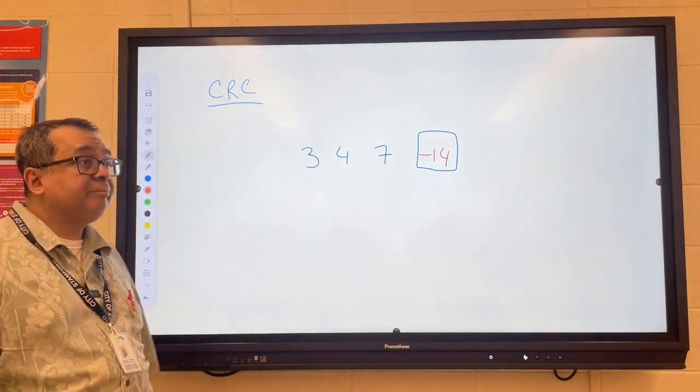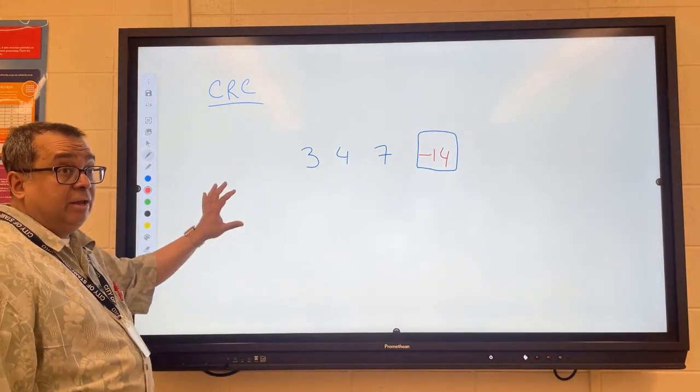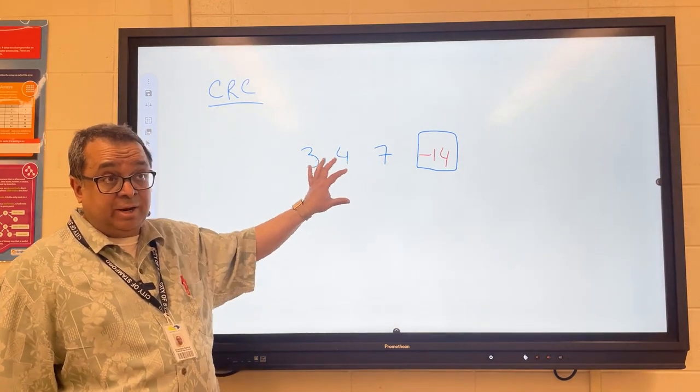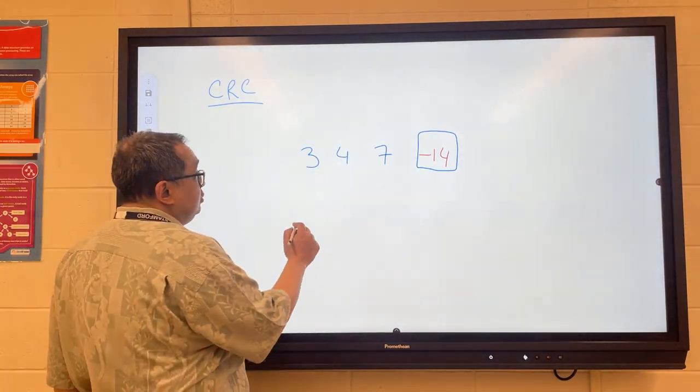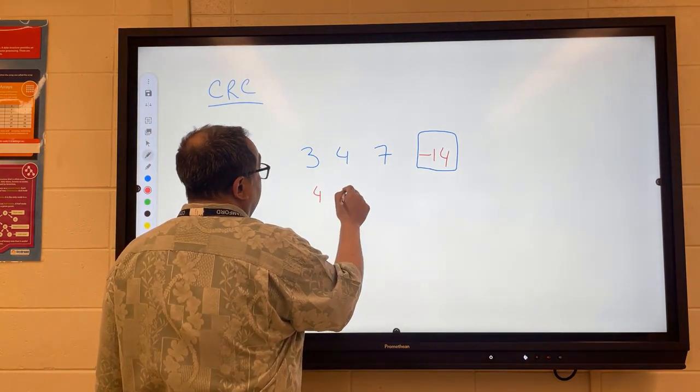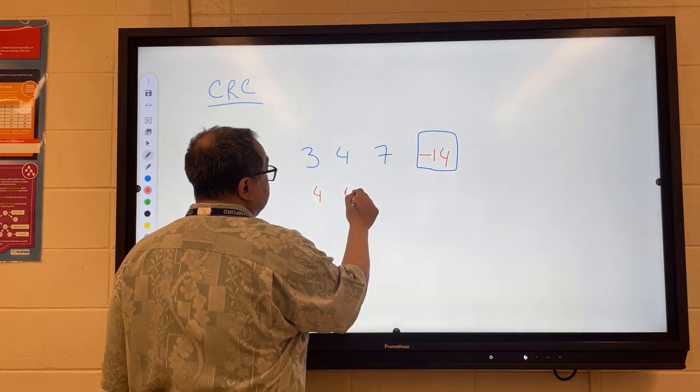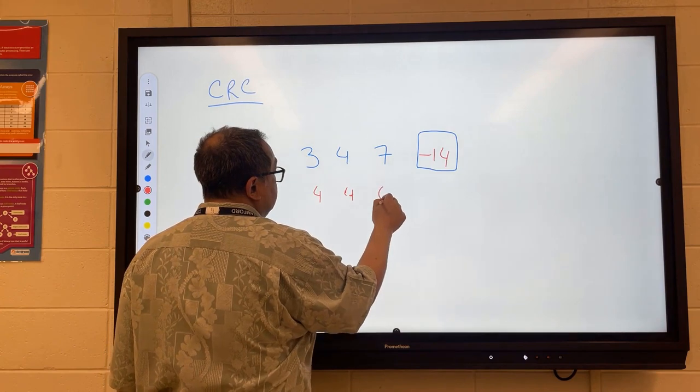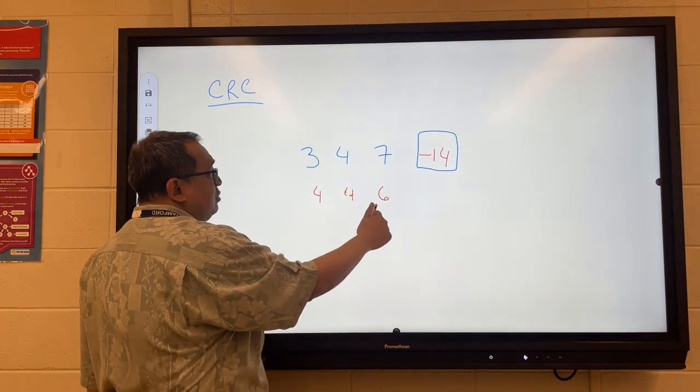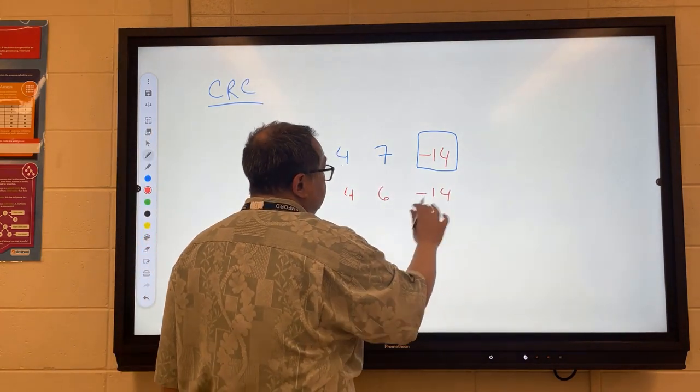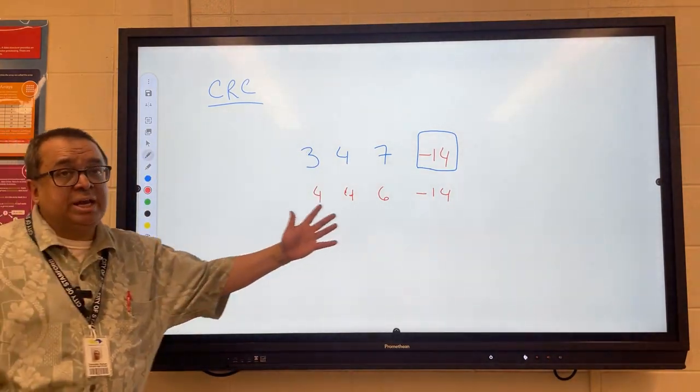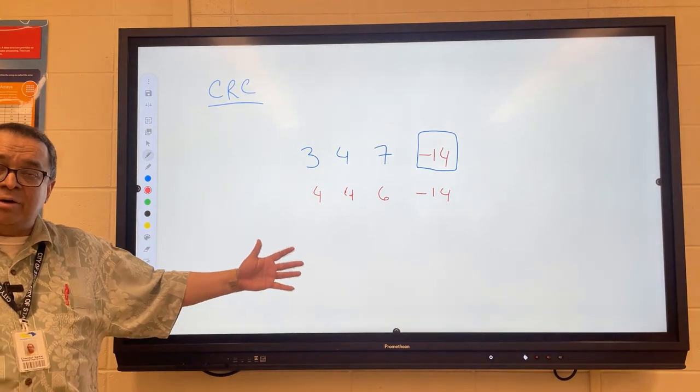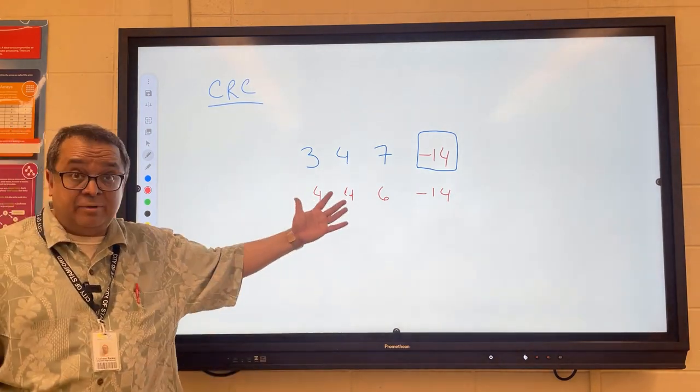Question. Let's say that when I'm transmitting this information, accidentally the 3 got turned into a 4, the 4 got sent okay, but the 7 got turned into a 6. So I accidentally added one here and subtracted one here, and then this still got sent along. What I want to know is, is the checksum test going to pass now or fail? We want it to fail because we got these errors.